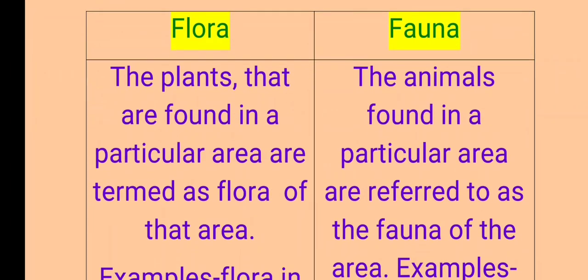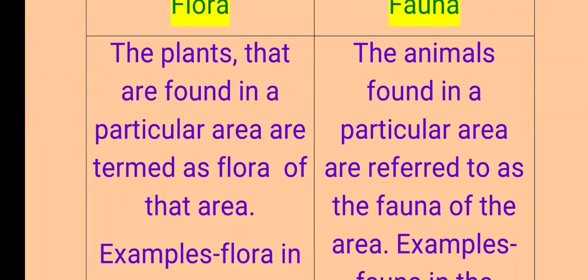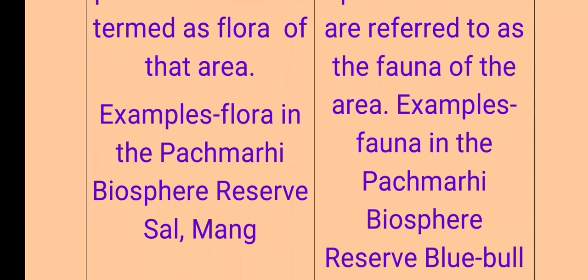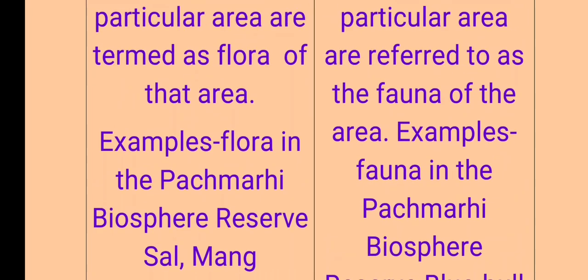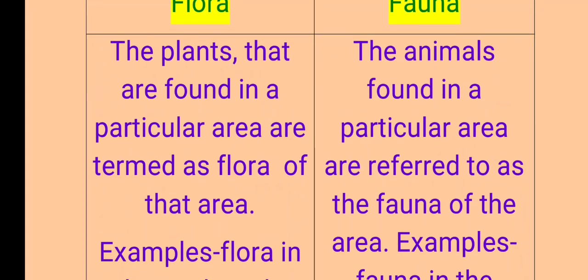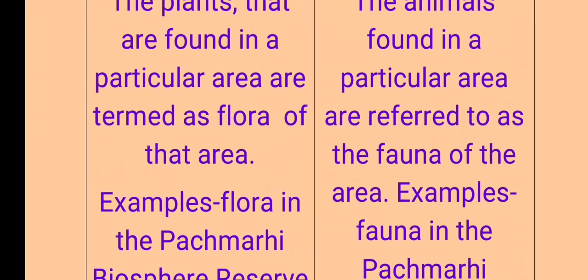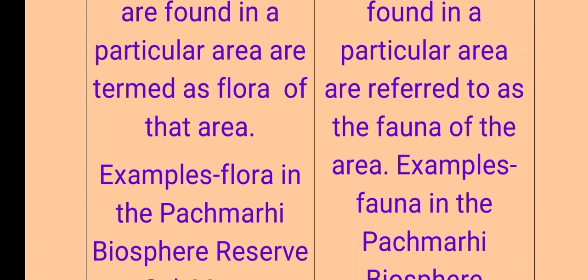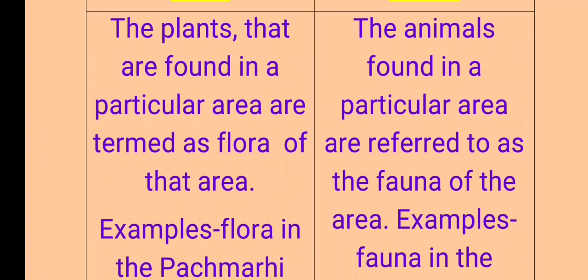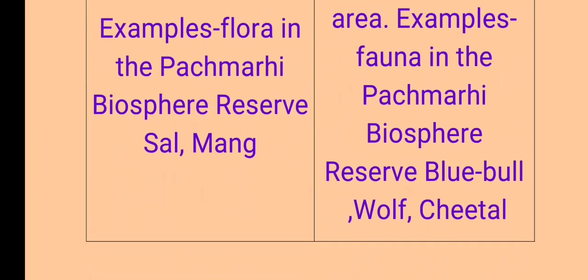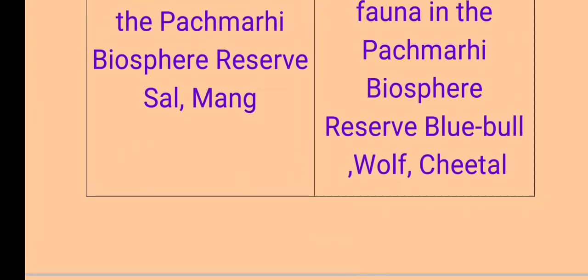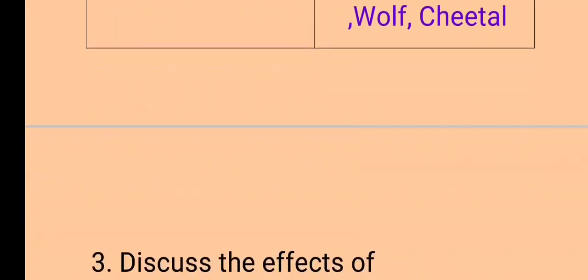Next, D: Flora and fauna. The plants found in a particular area are termed as the flora of that area. For example, flora in the Panchmari biosphere includes sal and mango. The animals found in a particular area are referred to as the fauna of that area. For example, fauna in the Panchmari biosphere includes blue bull, wolf, and cheetah.